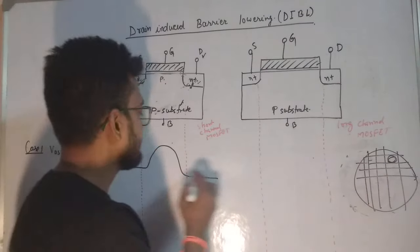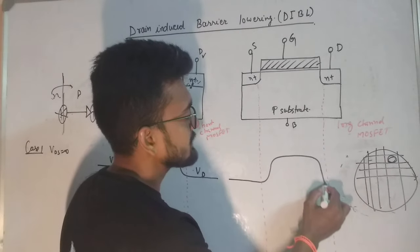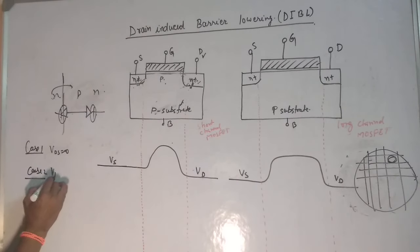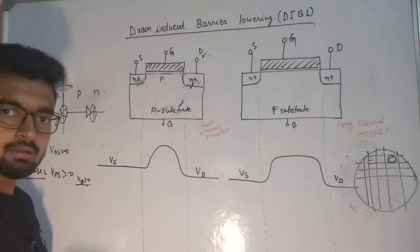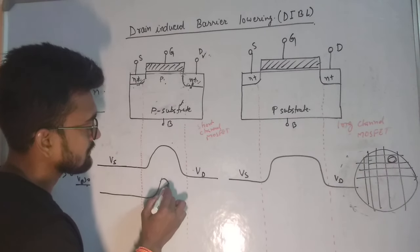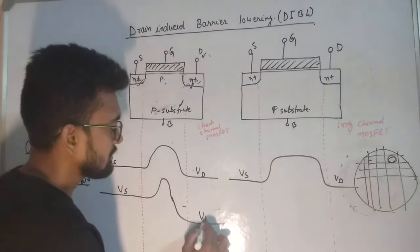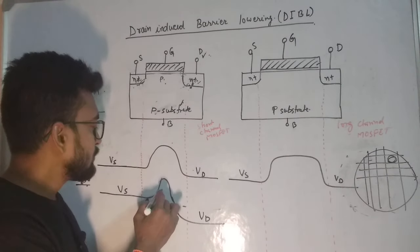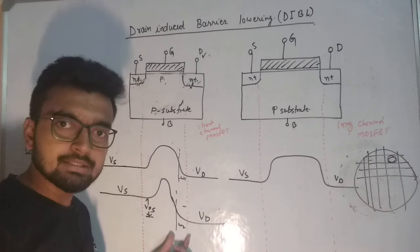For the short channel device we have Vs on one side and Vd on the other. For long channel devices it will be Vs and Vd similarly. As we increase the drain voltage in case two, the curve changes shape. With the increase in drain voltage, the width w1 at the source side and w2 at the drain side represent the depletion region widths, and these increase as we increase the drain voltage.